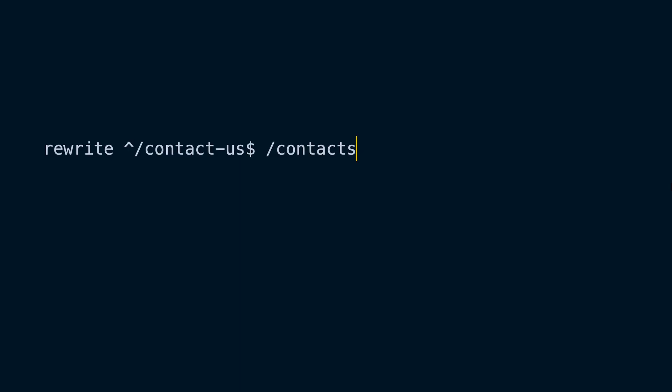This is all possible thanks to the Nginx rewrite directive. This directive accepts a regular expression that matches against the incoming request and redirects the user to a given location. Let's take a look at a few examples. This redirect rule, for example, will match requests to the forward slash contact-us URL and redirect it to forward slash contacts. Notice the caret character at the beginning of the expression — it indicates that this should match a URL that starts with forward slash contact-us.